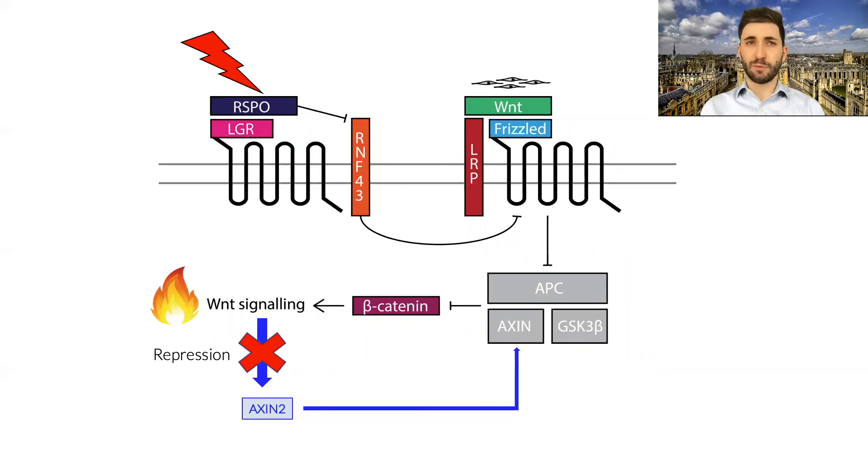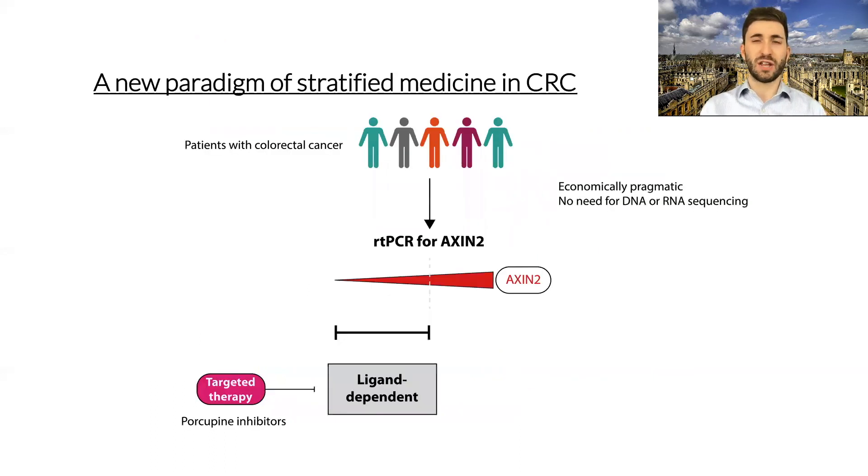But we believe we can take this one step further, because not only are we thinking about the biology of these tumours, but also we can think about a new approach to stratified medicine in colorectal cancer. This is because simply by measuring Axin2, for example by real-time PCR, we can identify patients that have ligand-dependent biology, and then target these patients for these new types of therapies, such as porcupine inhibitors. And we hope to bring this forward into clinical trials in the future.